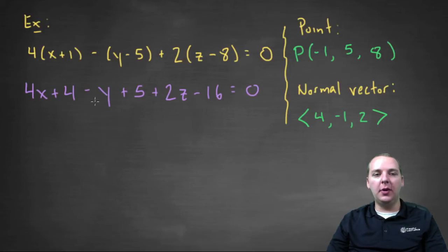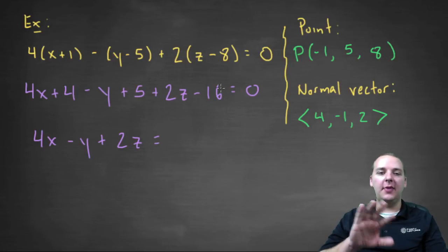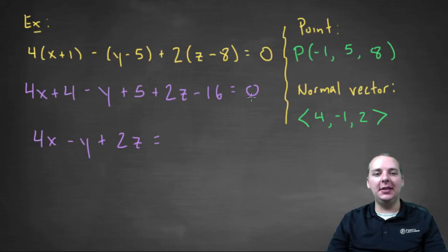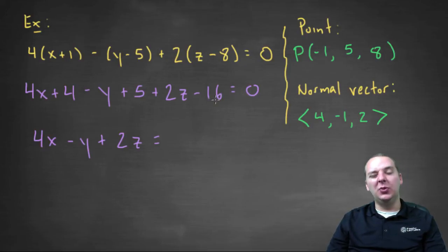We'll save the four X, the minus Y, and the two Z. So you have four X minus Y, plus two Z, equals, and then we'll subtract four, subtract five, and add sixteen to the right hand side. So you would get, let's see here, what's that, seven I believe.